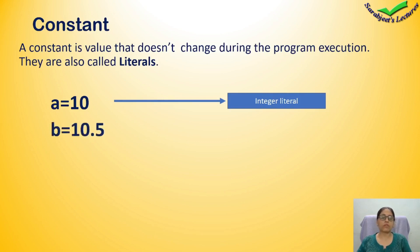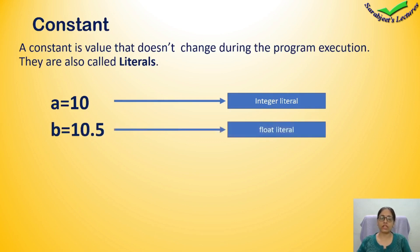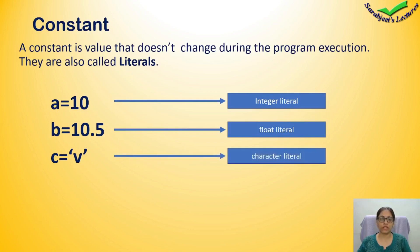If you write B is equal to 10.5, then 10.5 is a float-type constant. If you write C is equal to 'v' in single quotes, then v is a character literal — you use single quotes to initialize a character.